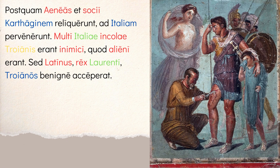Then: 'Sed Latinus, rex Laurentium, Troianos benigne acceperat' — but Latinus, the king of the Laurentians, had welcomed the Trojans kindly. Acceperat is pluperfect tense — you drop the -i and add -era. King Latinus is where you get the Latin people; this is a tradition of naming the founding king after the group after the fact. So he had welcomed them kindly even though everyone else had hated them.